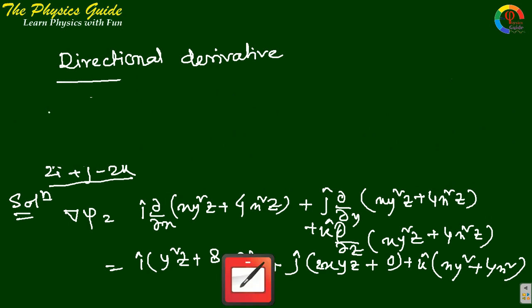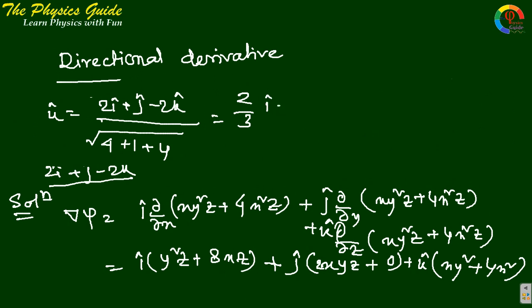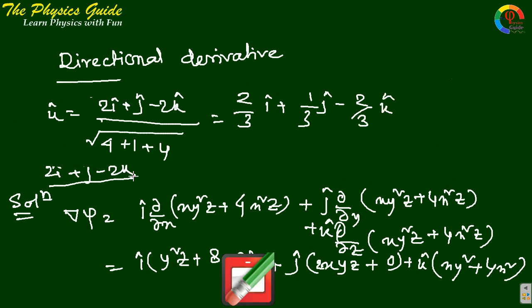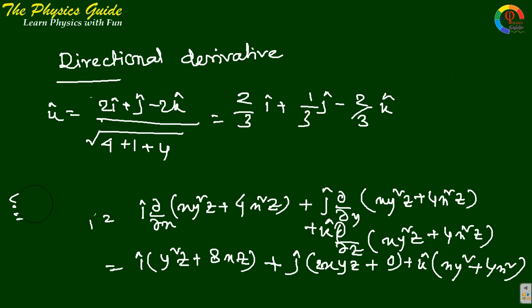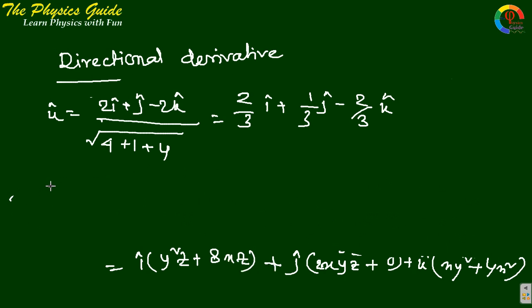For the second part, we find the unit vector of 2i plus j minus 2k. The modulus is the square root of (4 plus 1 plus 4), which equals 3. So the unit vector is (2/3)i plus (1/3)j minus (2/3)k.